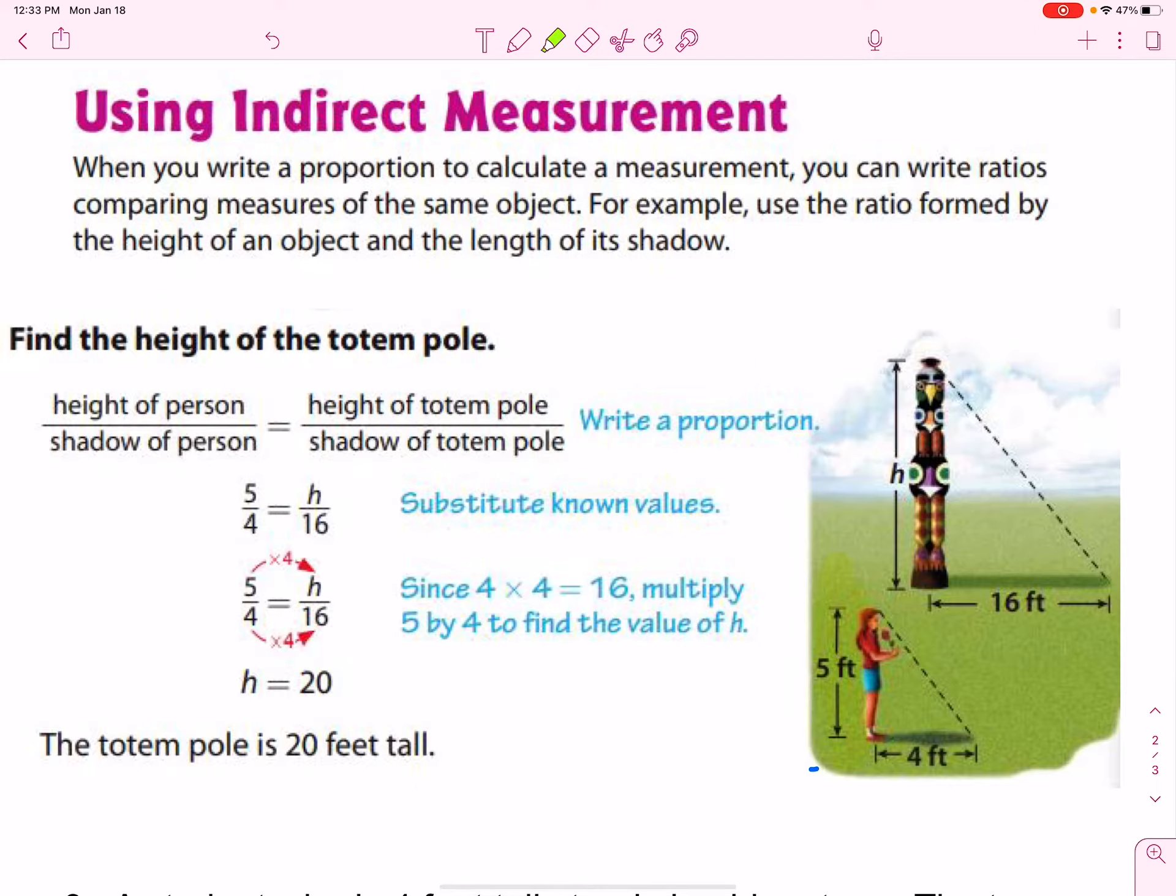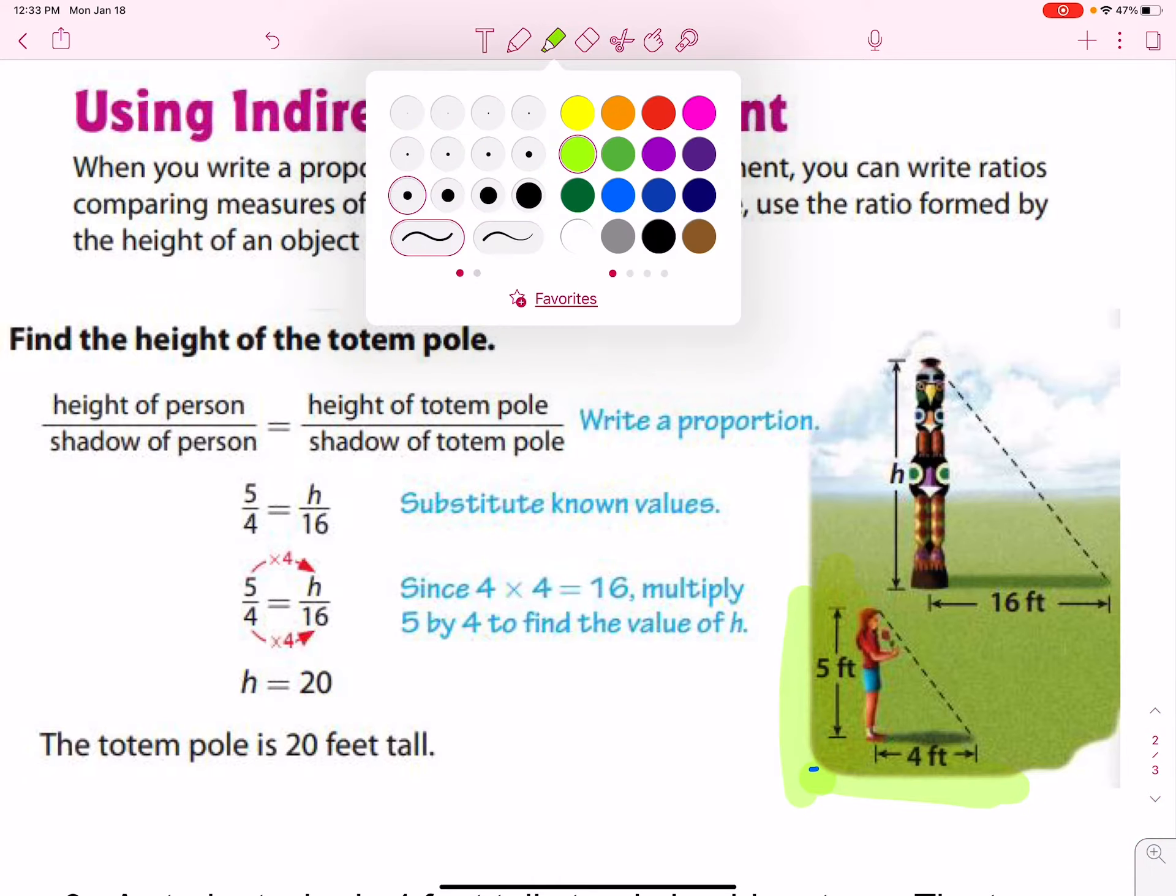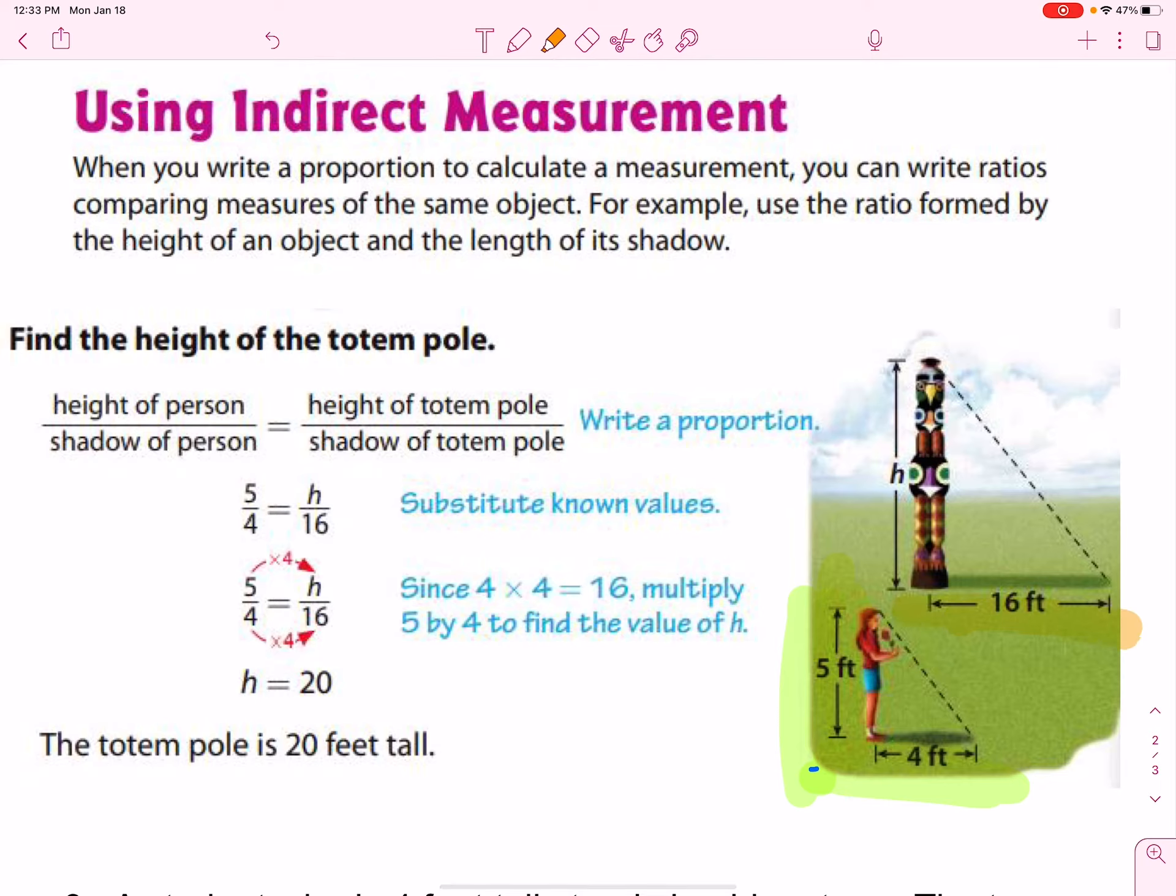So, at the same time of day, we can measure the shadow of this totem pole and use that to set up a proportion to find how tall it would be.